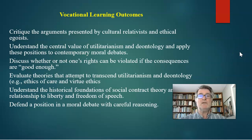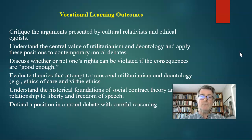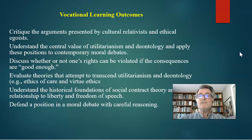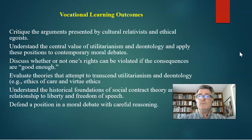I want to break down the vocational learning outcomes — there are six of them. I'll briefly give you a background on each, and go into more in-depth analysis as we go through the weekly course content. The first is to critique the arguments presented by cultural relativists and ethical egoists. A cultural relativist is a person who believes that no one society is better than another — no one person's way of life is better or worse than another. This is important when looking at remedies against racism.